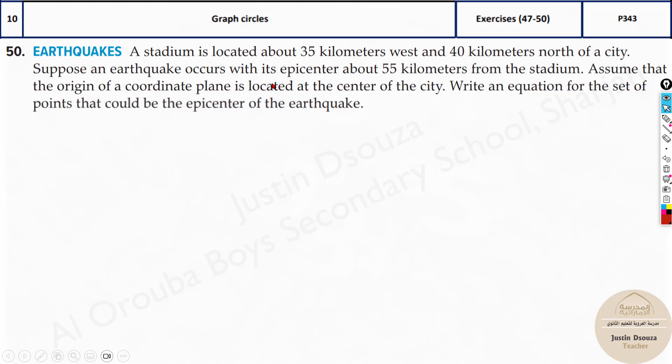Here we have one more problem. It's the last one in this topic. Earthquakes. The stadium is located about 35 kilometers west and 40 kilometers north of a city. So first thing north, south, east and west. Now they have 35 kilometers west over here. So it'll be minus left side 40 north. That'll be plus.